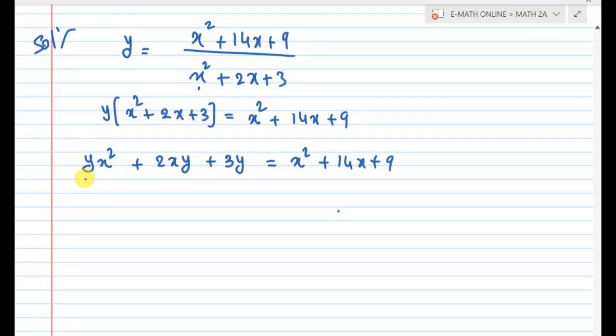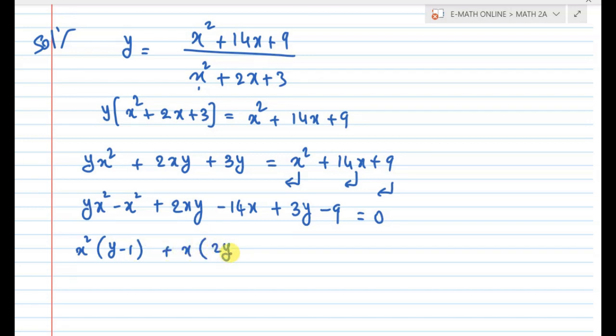Next, move everything to one side. yx squared minus x squared, 2xy minus 14x, and 3y minus 9 equal to 0. So this means x squared common: y minus 1, x common: 2y minus 14, and the remaining: 3y minus 9 equal to 0.